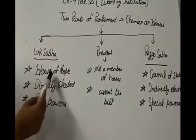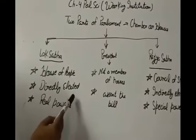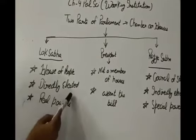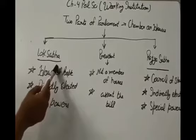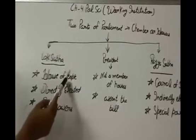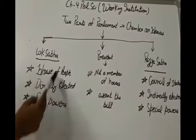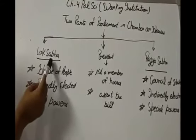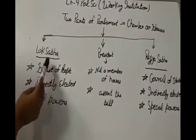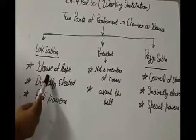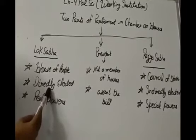Once the Lok Sabha passes a budget of the government or any other money-related law, the Rajya Sabha cannot reject it. The Rajya Sabha can only delay it by 14 days or suggest changes to it. It's the wish of the Lok Sabha whether they will accept the changes or not. And the Lok Sabha also controls the Council of Ministers because the person who gets the majority from the Lok Sabha members is appointed as the Prime Minister. But if the Lok Sabha members pass a no-confidence motion, the Prime Minister and the Council of Ministers have to quit.